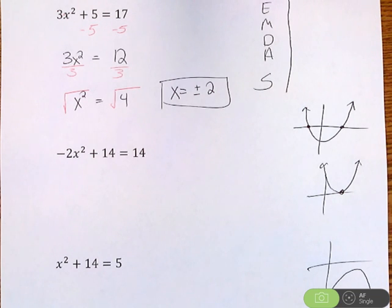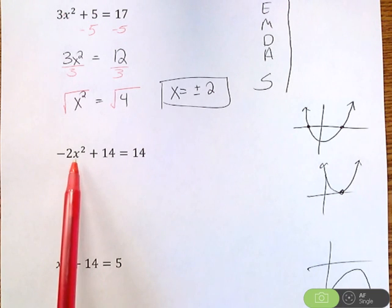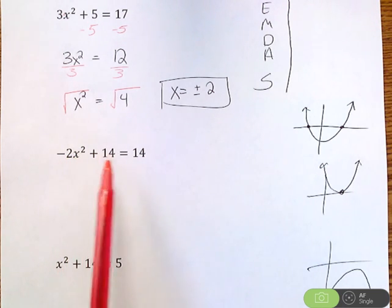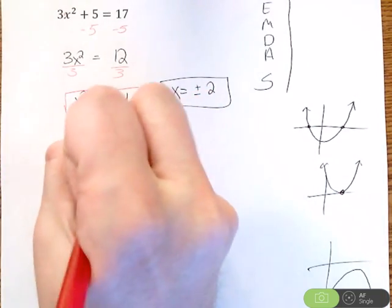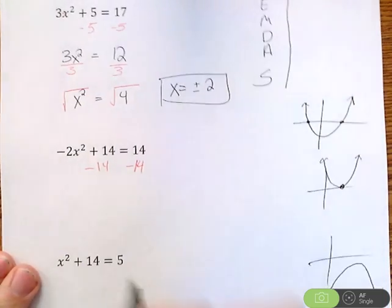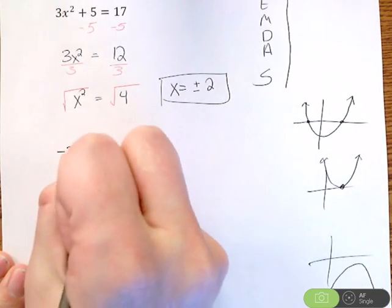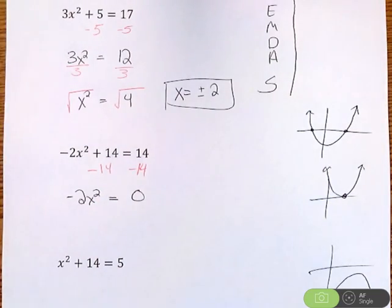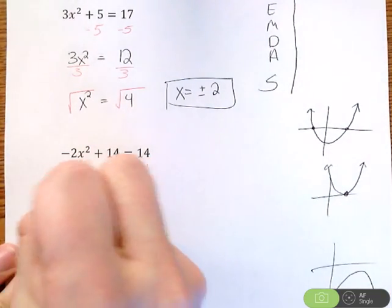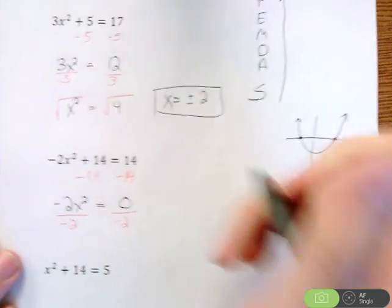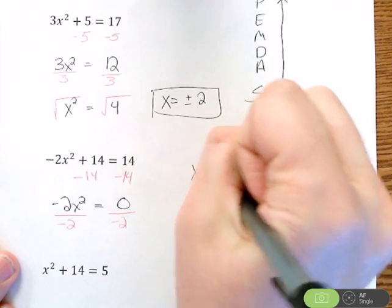So let's move on to the next one. We have negative 2x squared plus 14 equals 14. Again, order of operations backwards to get x alone. So I have negative 2 times x squared plus 14. First thing I'm going to move away is that 14. So when I subtract 14 from both sides, I get negative 2x squared equals 14 minus 14, zero. Still working to try and get that x by itself. The next thing I would do is divide by negative 2 on both sides.